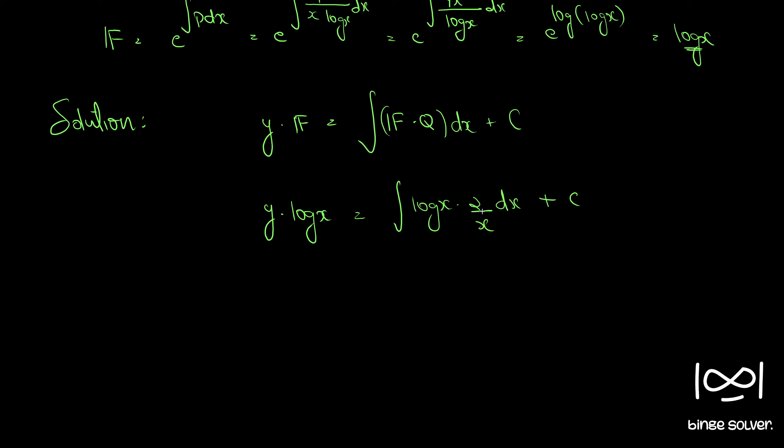If you put log x as t, we have t into dt here. So if you put t equal to log x, we have dt equal to 1 by x dx. So 1 by x dx becomes dt, so we have t dt plus c.